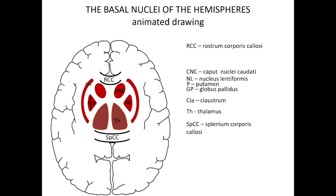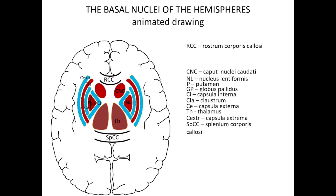Now the white matter structures: first, CI — capsula interna; then CE — capsula externa; and the most external, capsula extrema.